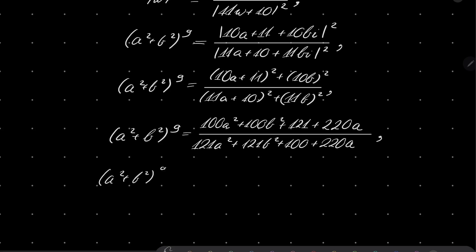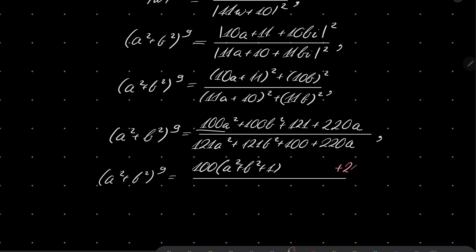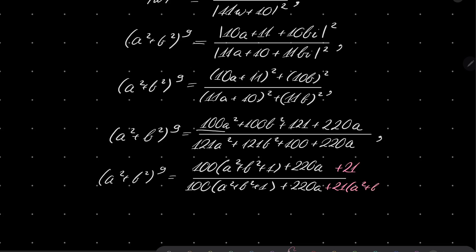Now I will write this in a tricky way. In the numerator I write 100 times (a squared plus b squared plus 1), which covers 100a squared, 100b squared, and 100, leaving plus 21, plus 220a. In the denominator I write 100 times (a squared plus b squared plus 1), plus 220a, and what is missing is 21a squared and 21b squared. Notice that the 100(a² + b² + 1) plus 220a part is the same in both numerator and denominator.